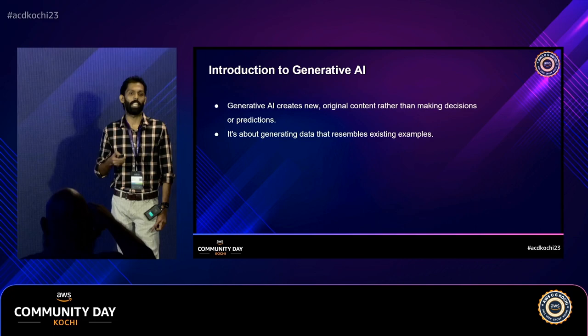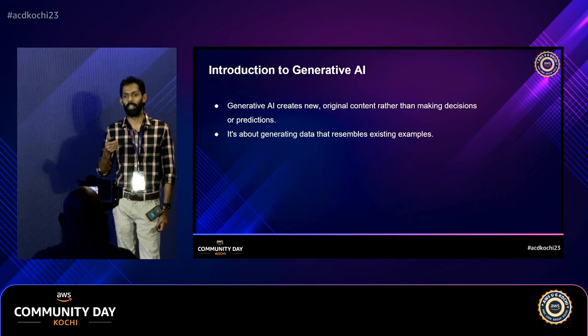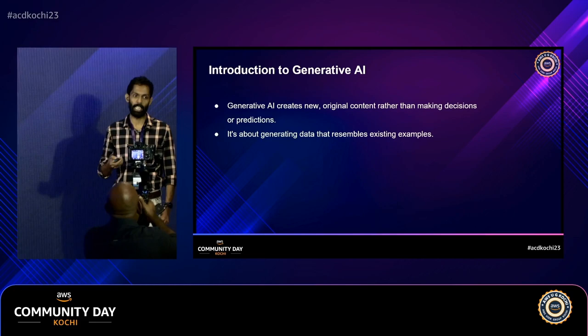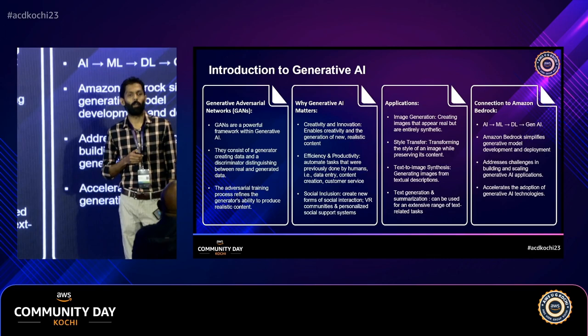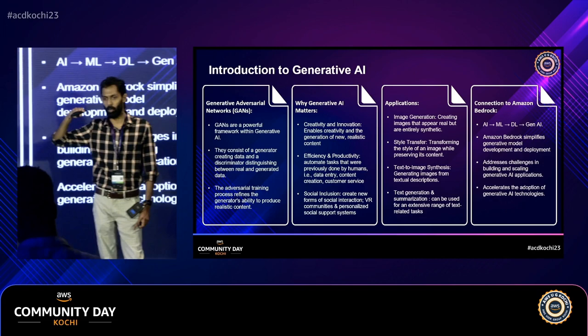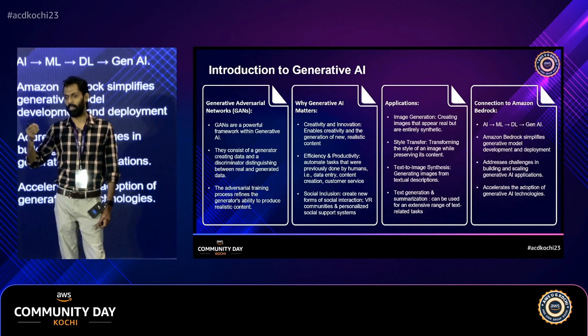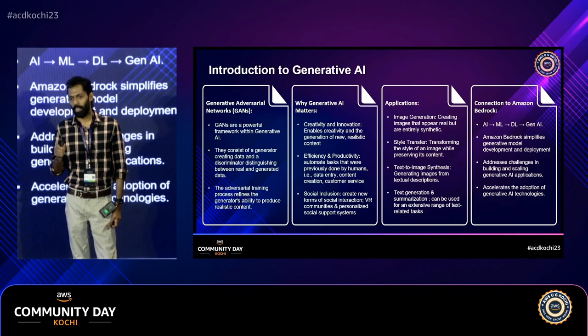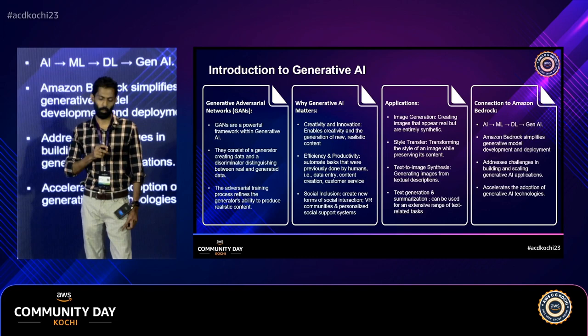Let's start with generative AI. What is generative AI? Generative AI is all about creating new contents and ideas — it may be images, text, videos, songs. It's all about generating new data. Think from a 30,000 feet view: we have artificial intelligence at the top, under that we have machine learning, below that we have deep learning, and below that we have generative AI. So generative AI fits into the overall ecosystem of artificial intelligence at that deepest layer.